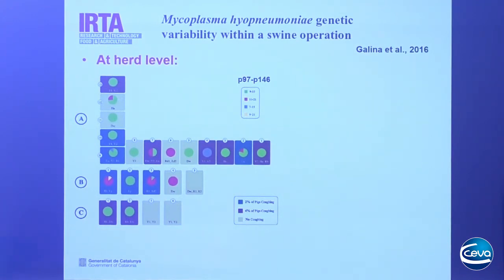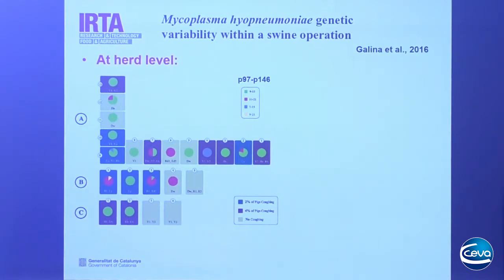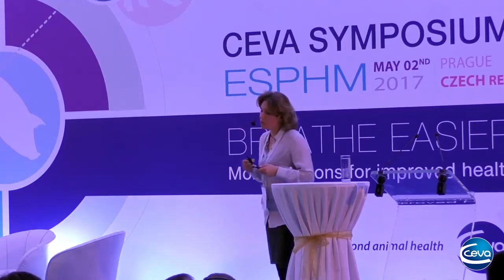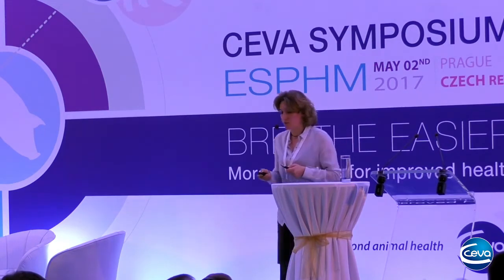The green genotype is characterized by nine repetitions of P97 and 15 repetitions of protein P146. In these three units only four genotypes were detected. The study tried to correlate detection of these different genotypes with the percentage of pigs showing coughing — green squares represent rooms with no coughing, brown squares represent rooms with a low percentage of coughing pigs, and blue squares represent rooms with a medium percentage of coughing pigs. No correlation was found between genotype and percentage of coughing.